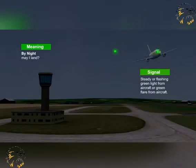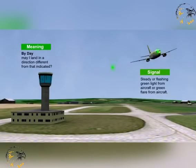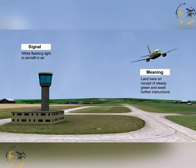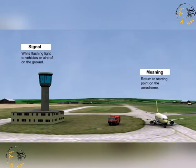A steady or flashing green light or green flare from an aircraft means that the aircraft is asking to land if at night, or if by day, asking to land in a different direction from that indicated. A flashing white light from air traffic control to an aircraft in flight means that the pilot is to land here on receipt of a steady green light and then await further instructions. A flashing white light from air traffic control to an aircraft or vehicle on the ground means that the aircraft or vehicle is to return to the starting point on the aerodrome.